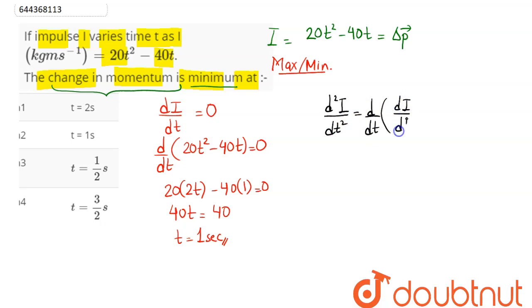We have dI/dt here. Now, dI/dt value we have computed as 40t - 40. So differentiating this, we get 40 × 1 - 0, which gives d²I/dt² = 40.